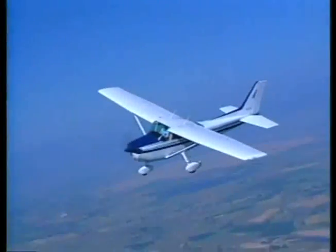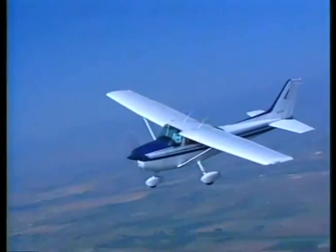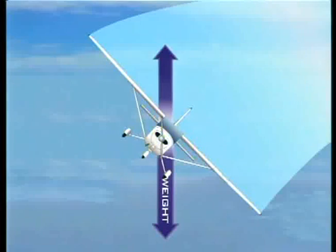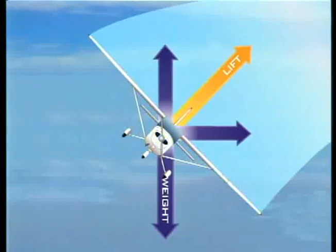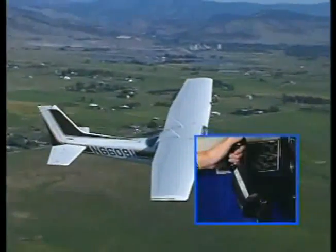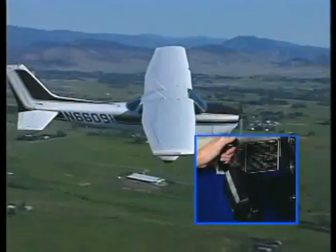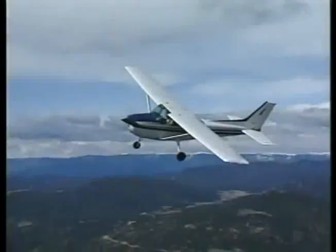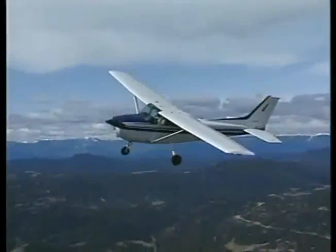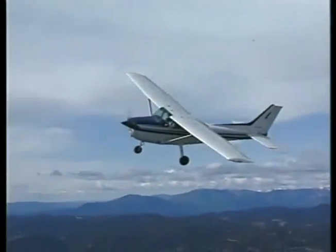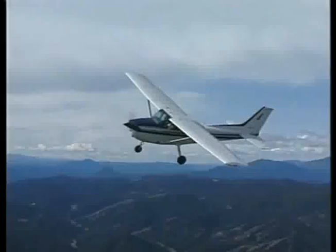Turning flight introduces new concepts with respect to the aerodynamic forces acting on the airplane. In a bank, total lift is divided into two components: one acts vertically to oppose weight, and the other acts horizontally to move the airplane in the direction of the turn. Since the vertical component of lift is reduced in a turn, to maintain altitude you must apply back pressure on the yoke to increase the angle of attack until the vertical components of lift and weight are again equal. The horizontal component of lift creates centripetal force, which acts toward the center of rotation, working to oppose inertia — the tendency of the airplane to continue in a straight line.